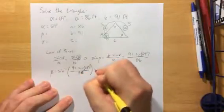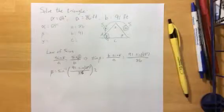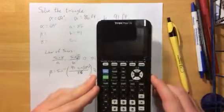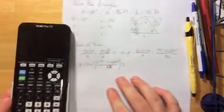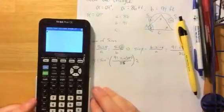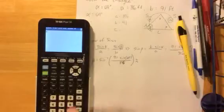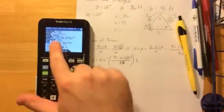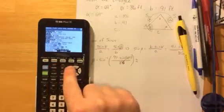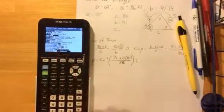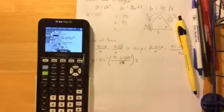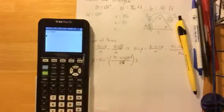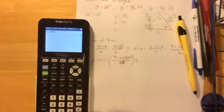This is where a calculator is going to come in handy because we are trying to calculate the inverse sine of 91 times the sine of 69 degrees divided by 86. I took the liberty of bringing along my TI-84 Plus CE that I just purchased earlier today. If TI wants to throw a little money my way for advertising their calculator for free... First thing I want to do is make sure that my calculator is in the proper degree mode.